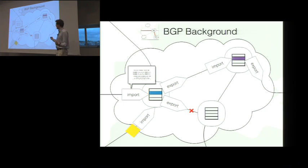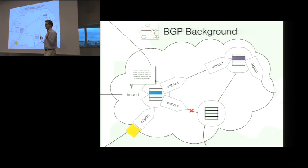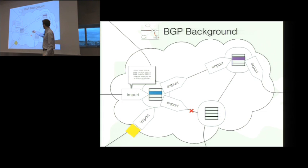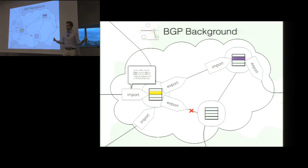This process continues over and over again. Every router in some ISP on the internet will import announcements it receives, install them in the routing table, and then export them. The final thing to explain is what happens when BGP receives multiple announcements for the same destination. BGP takes both announcements and runs a fairly complicated process to select one it believes to be better — in this case, yellow is preferred over blue.